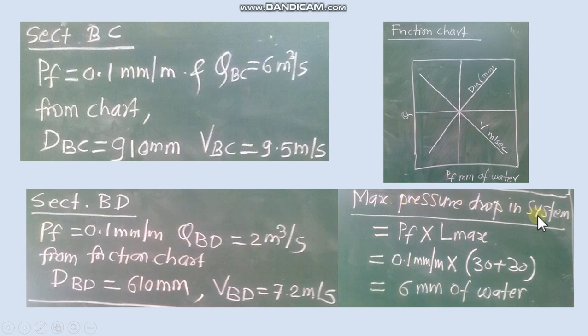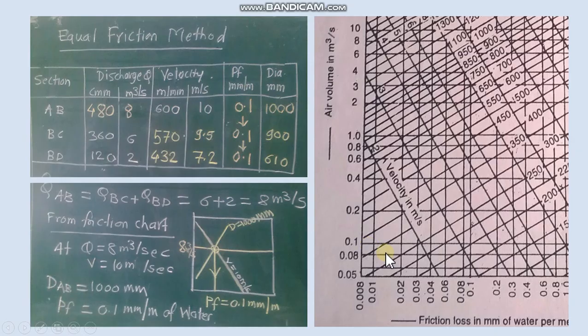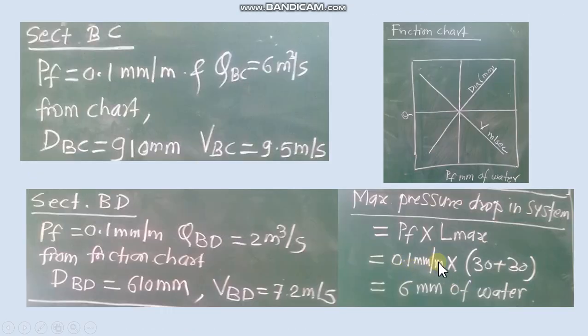Now maximum pressure drop in a system is a product of PF and maximum length. So here maximum length is 30 plus 10 is 40 meter and 30 plus 30 is 60 meter. So 60 meter is maximum length. We will take for the calculation and we calculate maximum pressure drop in the system.